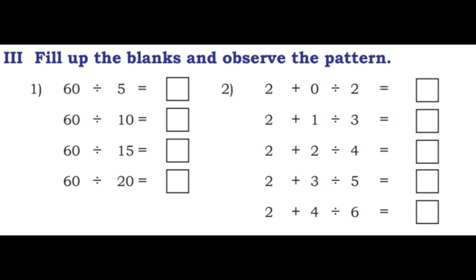Third one: Fill up the blanks and observe the pattern. First question: 60 divided by 5. 5 twos are 10, 5 fours are 20, 5 twelves are 60. So dividing 60 by 5 gives 12; the sequence is 12, 6, 4, 3. This is in a pattern. Second question: 2 divided by 2 is 1, 3 divided by 3 is 1, 4 divided by 4 is 1, 5 divided by 5 is 1, 6 divided by 6 is 1. This is in a pattern.